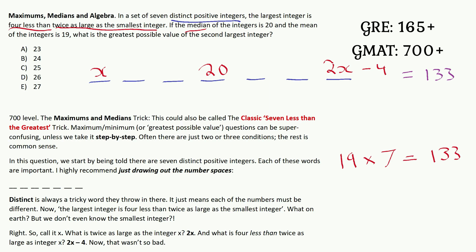Then it carries on. What is the greatest possible value of the second largest integer, which is this guy? Now things were going so well up to that moment, but now they've made it even harder. They're now asking for the greatest possible value of this second largest integer.